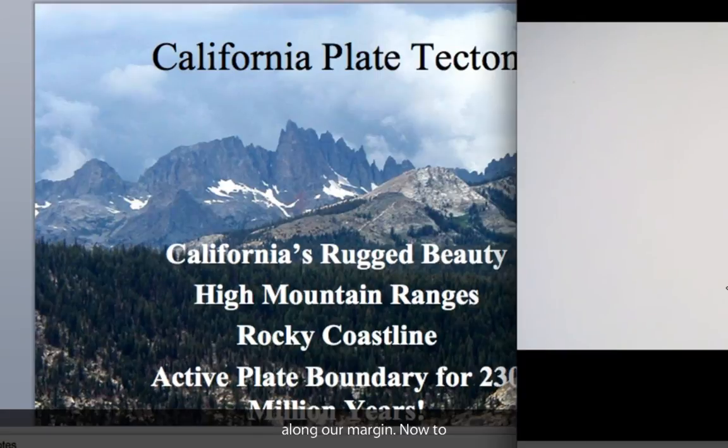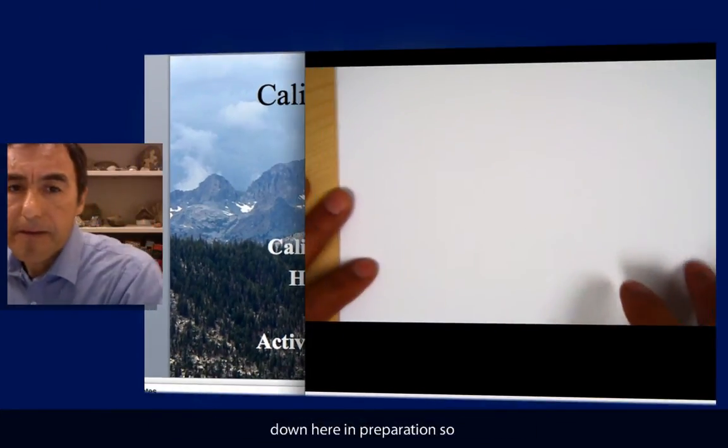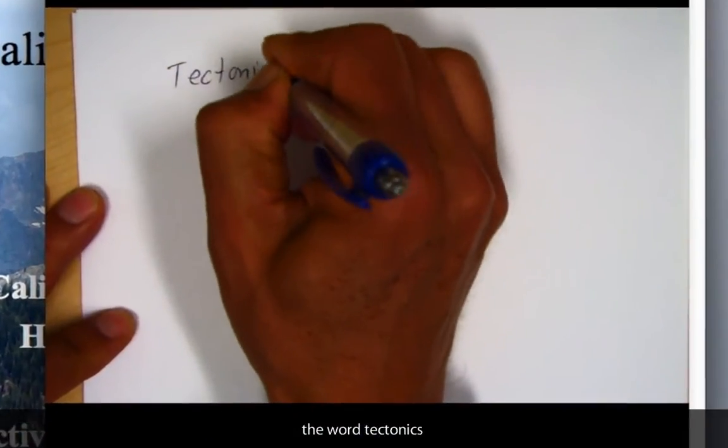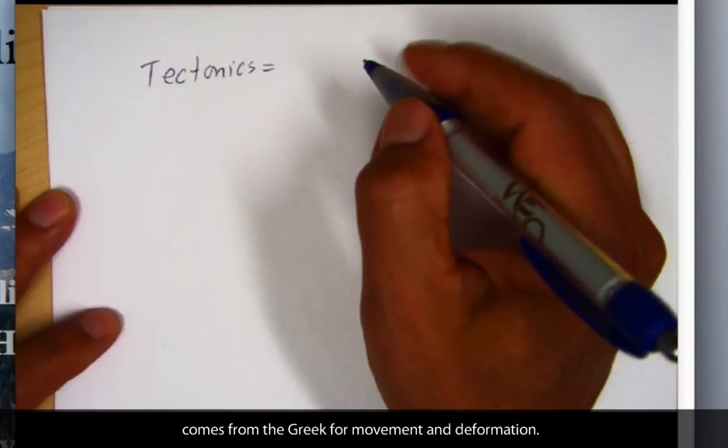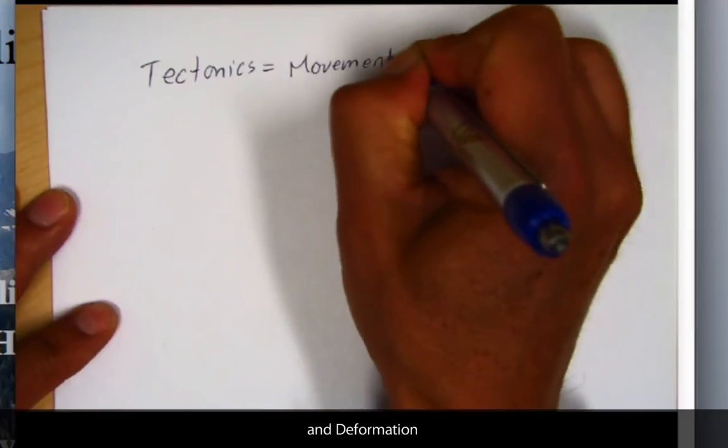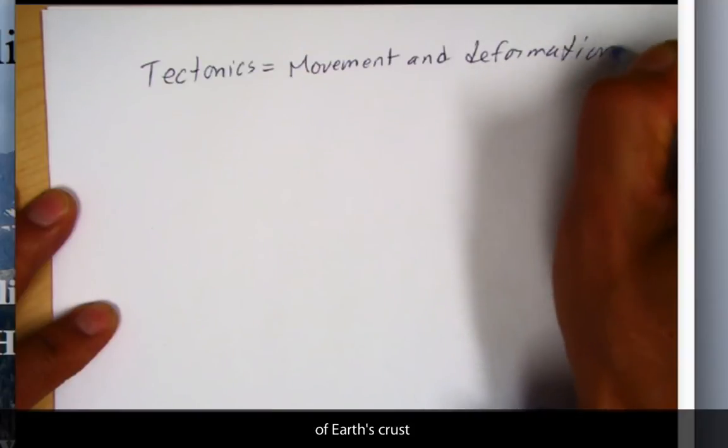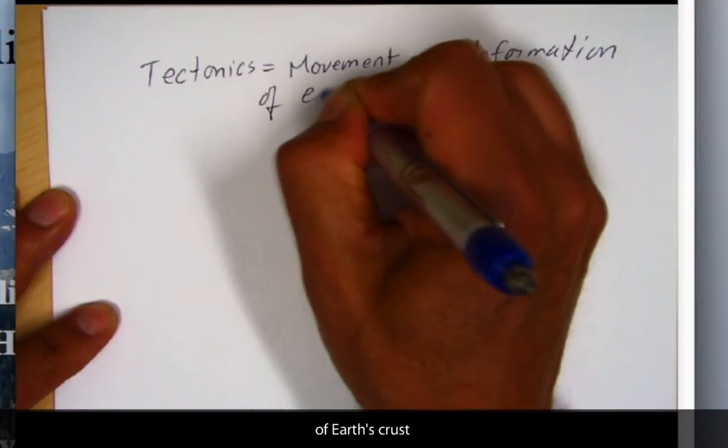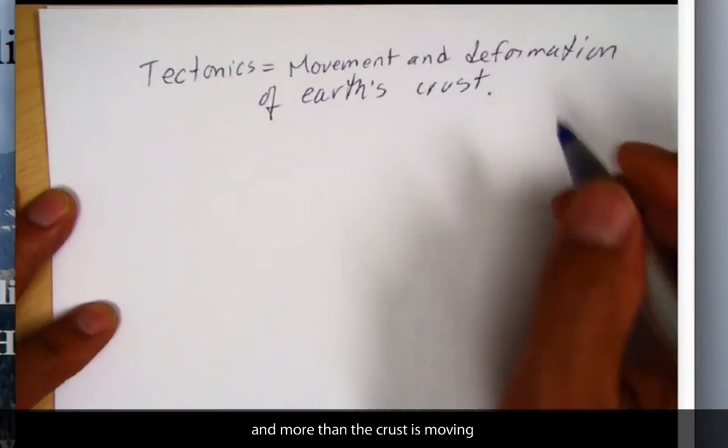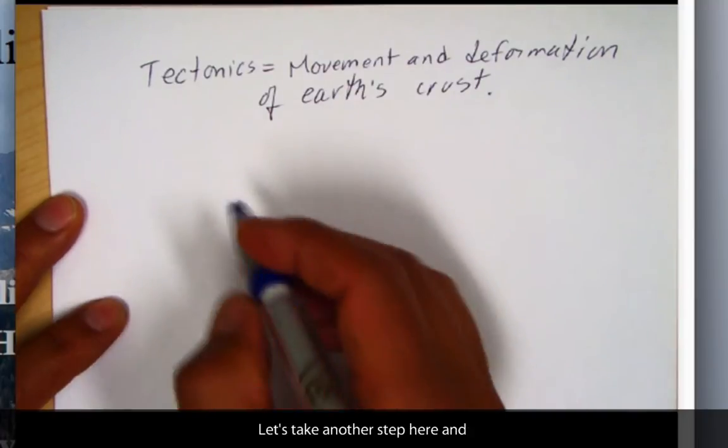Now, to start off with plate tectonics, I'm going to start writing some things down here in preparation. The word tectonics comes from the Greek for movement and deformation. So, we'll say movement and deformation of Earth's crust. And more than the crust is moving, but since we live up here, that's what we study, the outer reaches of Earth.